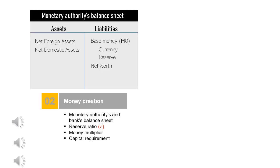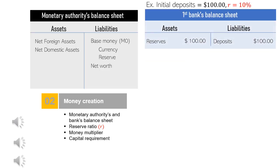After understanding the nature and definition of money, let's now discuss money creation — that is, how money grows bigger than its initial amount of base money. To comprehend this we need to know the simple T balance sheet. In accounting, a balance sheet consists of assets on the left side and liabilities plus net worth on the right side, which are exactly equal. For the monetary authority's balance sheet, its net foreign assets and net domestic assets are on the left, while base money, liabilities, and net worth are on the right. A commercial bank's balance sheet looks similar.